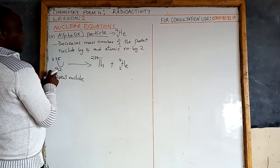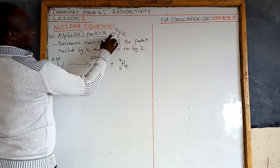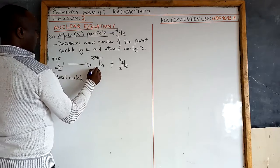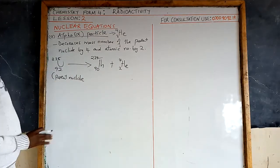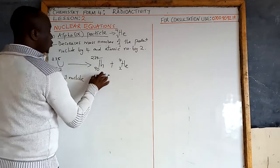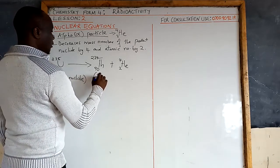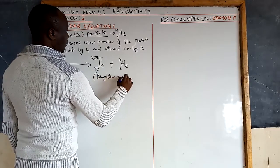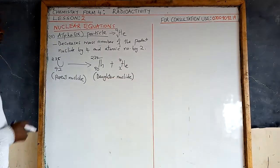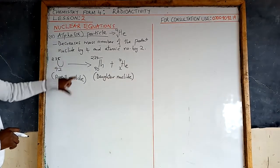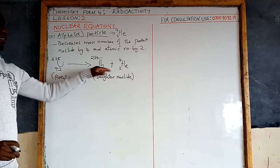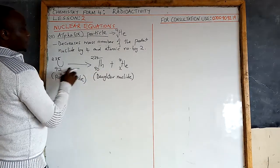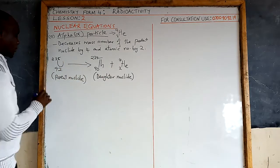We can verify the balancing: on the right side, atomic number 90 plus 2 equals 92, and mass number 234 plus 4 equals 238. This confirms the equation is balanced. That is how the alpha particle nuclear reaction is represented and balanced.